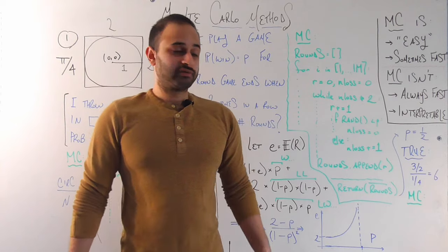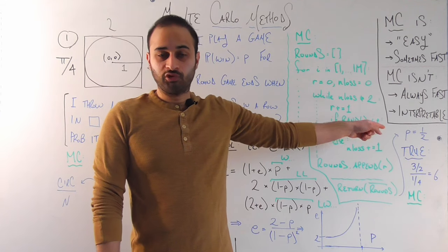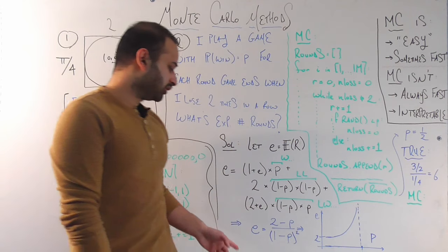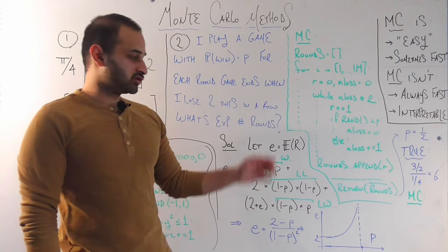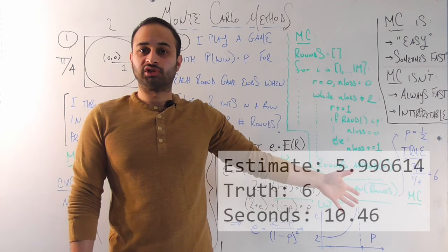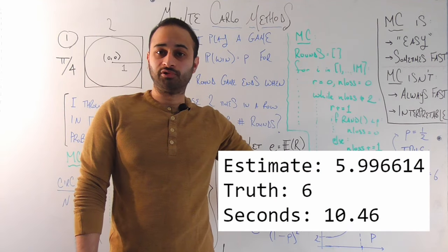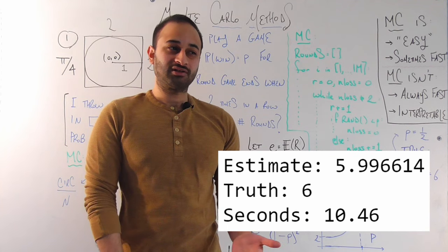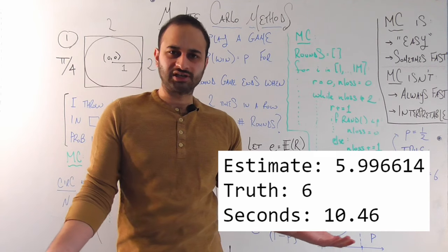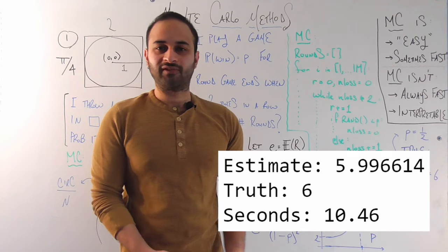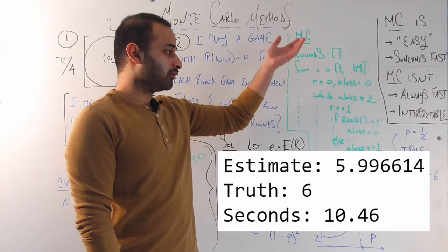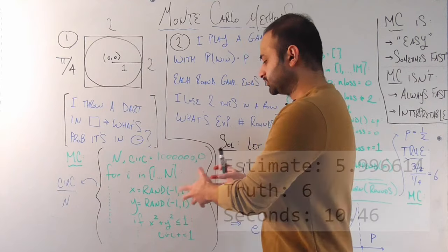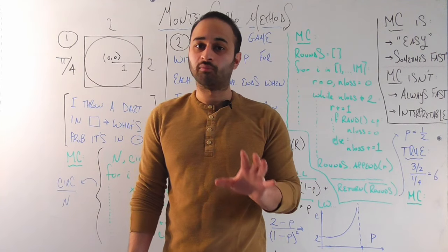Let's look at the results of this Monte Carlo method. If p equals one half, the true answer from our analytical formula is 6. The Monte Carlo simulation gets extremely close to that truth. Do notice it took about 10 seconds to get there — not super fast, but not a long time either. Notice it took quite a bit longer than the first, simpler Monte Carlo simulation. We'll touch on that point again in a moment.